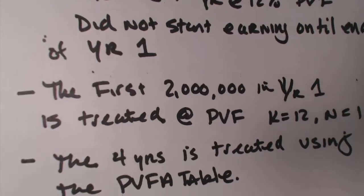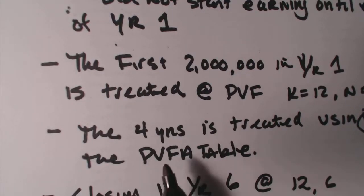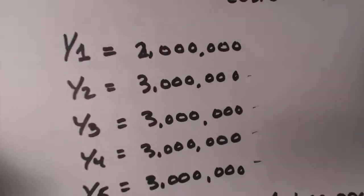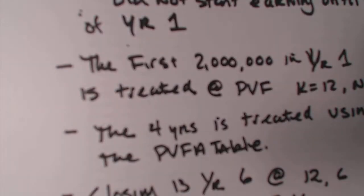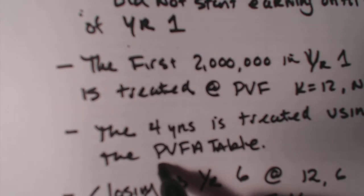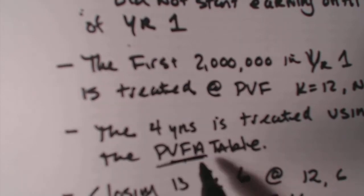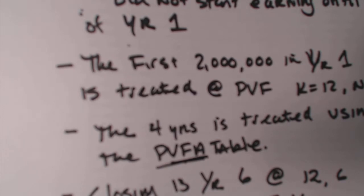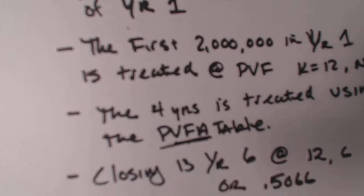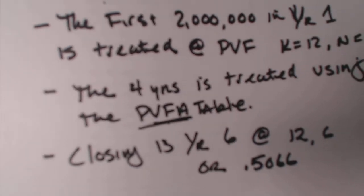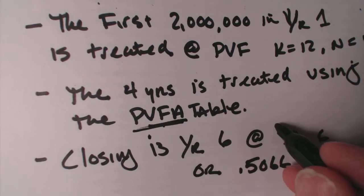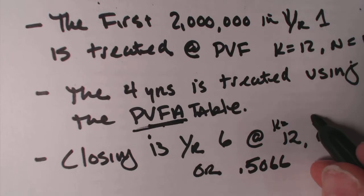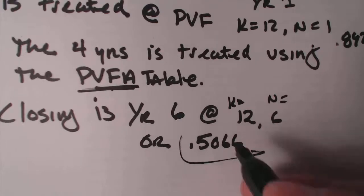Those are our assumptions, so write them down. The four years of profit — year two, year three, year four, and year five — those four years of continuous profit of three million are treated using a new table called the present value of future annuities, or PVFA. Since we're reinvesting that money we're going to use the PVFA table. The closing is year six and we are going to use K=12 and N=6, so the calculation factor is 5.066.